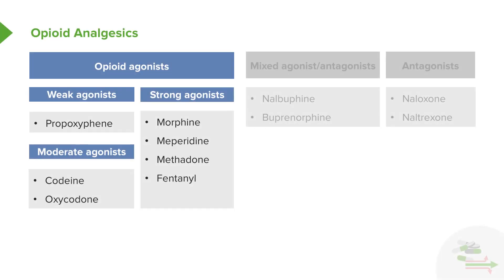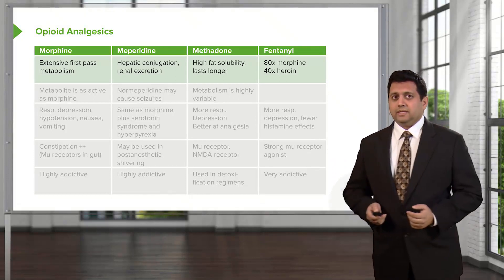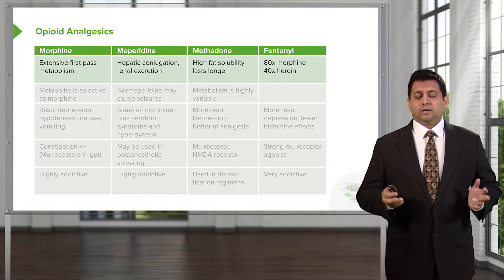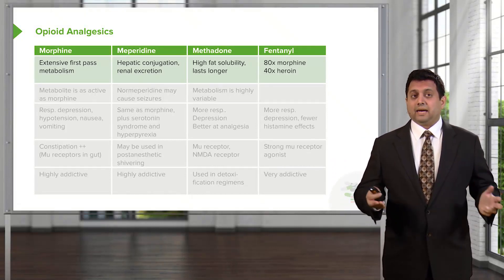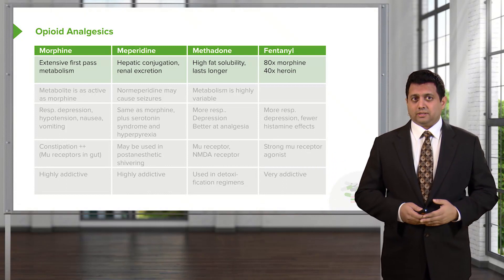This brings us to the strong agonists. There are several in this category — I've listed four of them: morphine, meperidine, methadone, and fentanyl. Let's go into detail about each of these. Let's start off with the metabolism of these drugs.